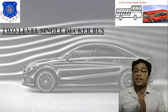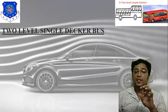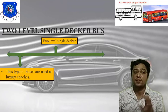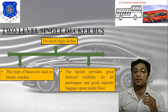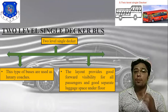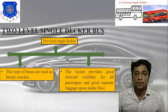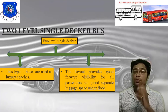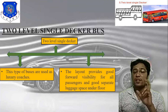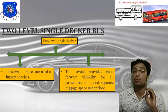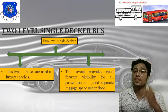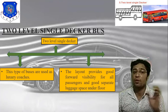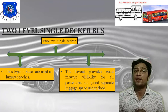The two level single deck bus is used as a luxury coach. Its layout provides good forward visibility for all passengers and good separate luggage space under the floor. This type of bus combines the benefits of a single deck with improved passenger comfort and storage.